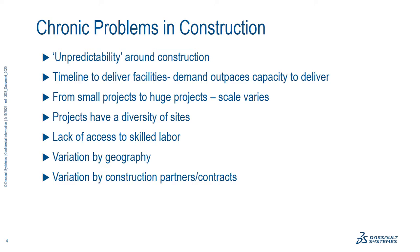We also have demographic factors where the pool of skilled labor is getting smaller, and the lack of access to skilled labor — especially on the construction site — is starting to have a real impact on players in construction. Compound all of this with variations by geography, where you might source a perishable material like concrete, trucking time, weather conditions, and variation by construction partners, contract structures and arrangements, and you have a very complex set of conditions that create a lot of unpredictability and risk for negative outcomes.